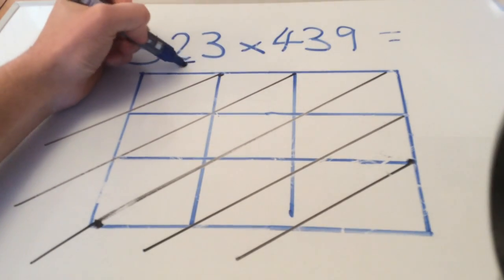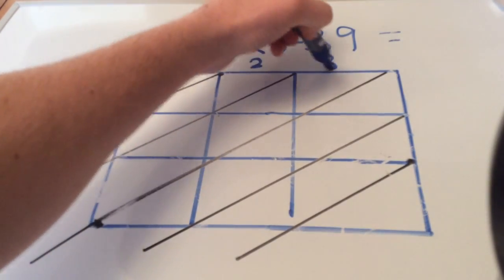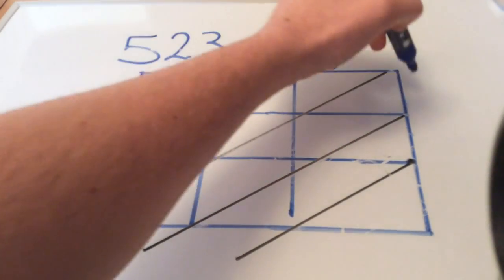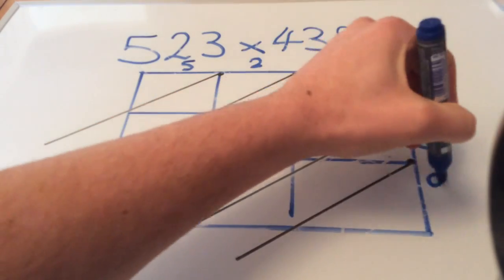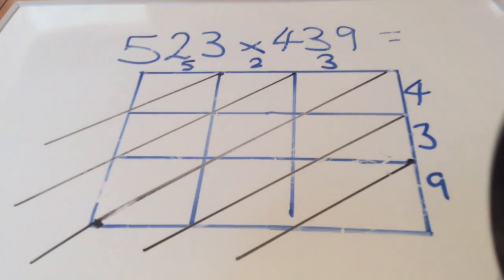523 at the top, so five, two, three, and 439 on the side, so four, three, nine. Now it's really important that you get your times table knowledge as good as it can be because there's lots of different calculations involved in this method.